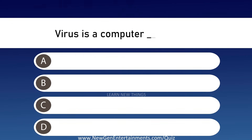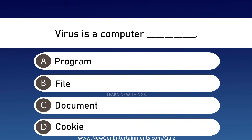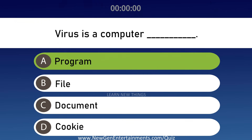A virus is a computer — Options are A: Program, B: File, C: Document, and D: Cookie. Answer is Option A, Program.